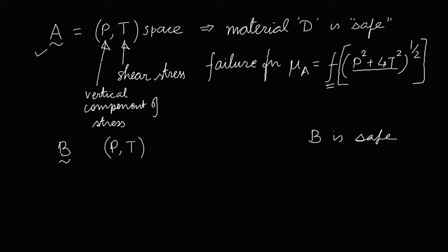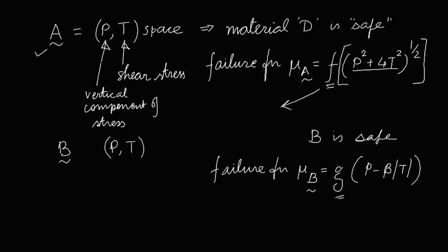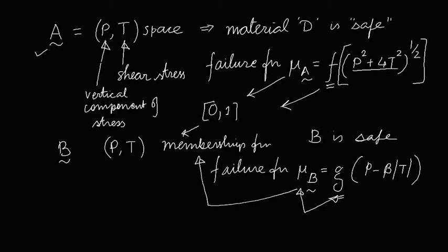Using another metric here, the failure function mu B tilde, which is another function G, which is P minus beta times mod T. These functions are such that they return values to be within 0 to 1 range. These values returned will be membership functions. The G function will make mu B lie between 0 and 1 and this will also form membership function.